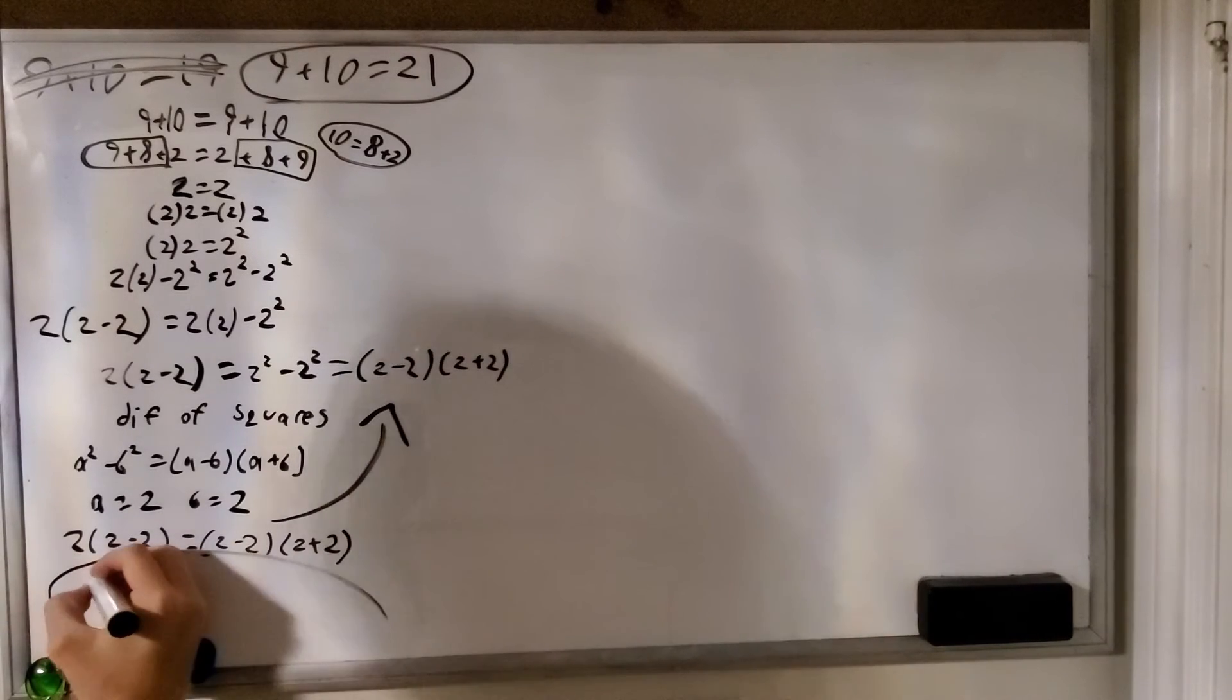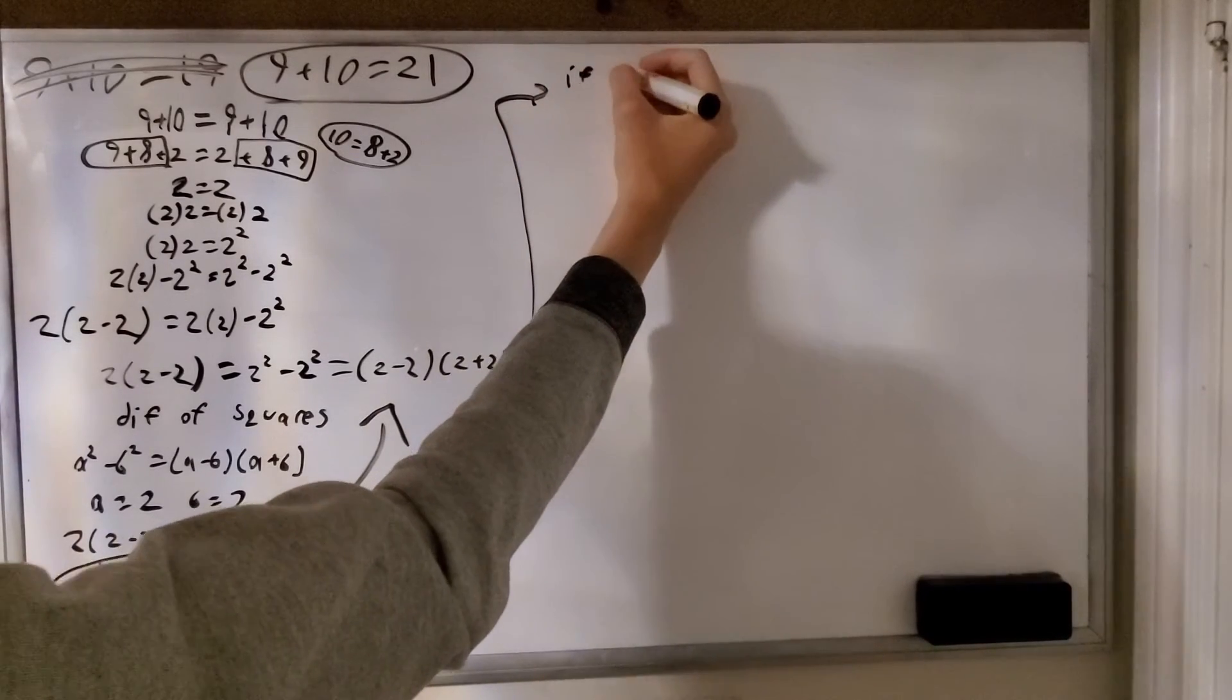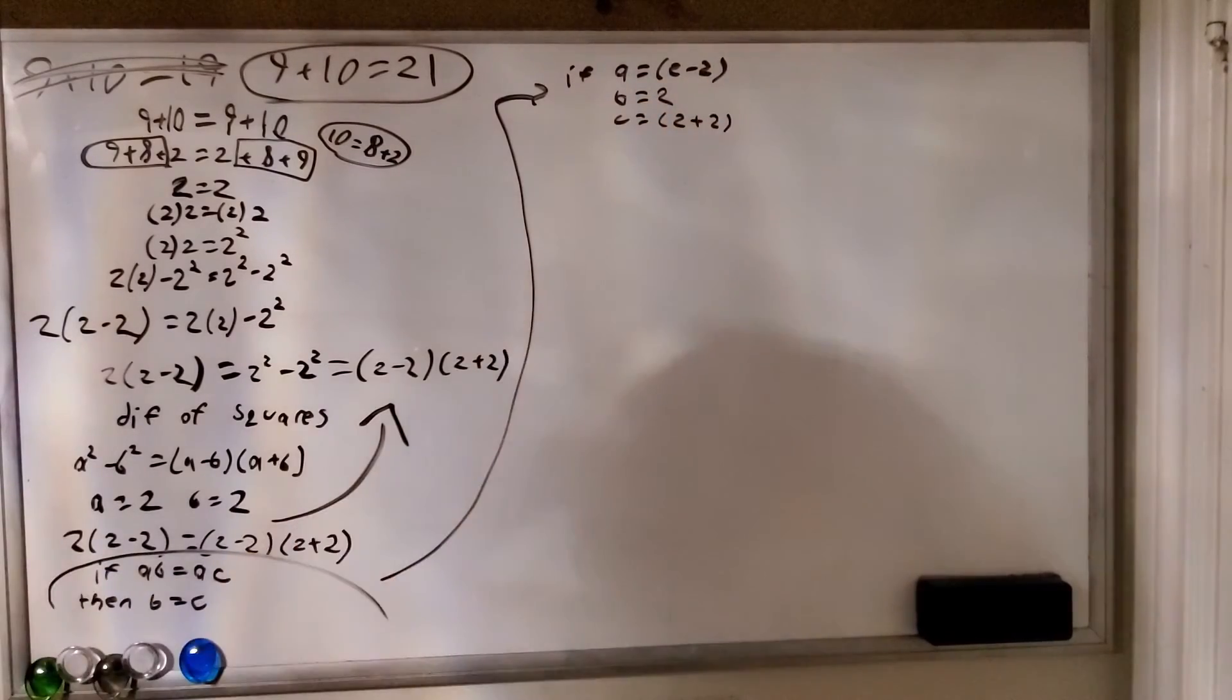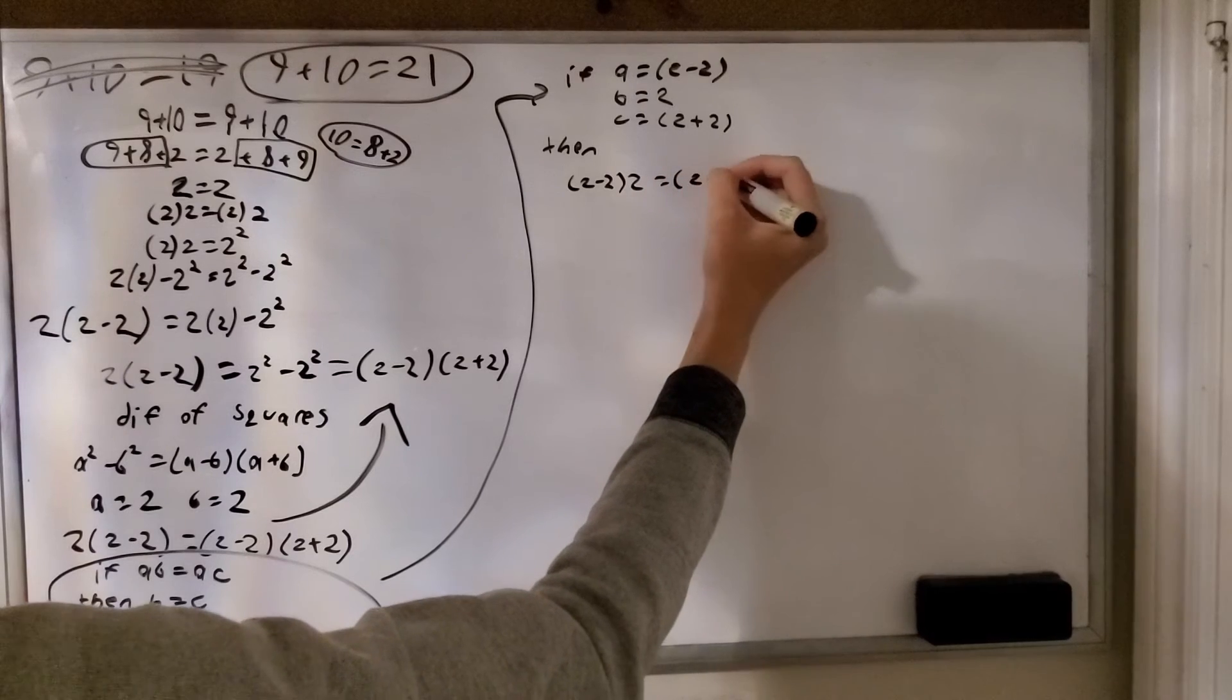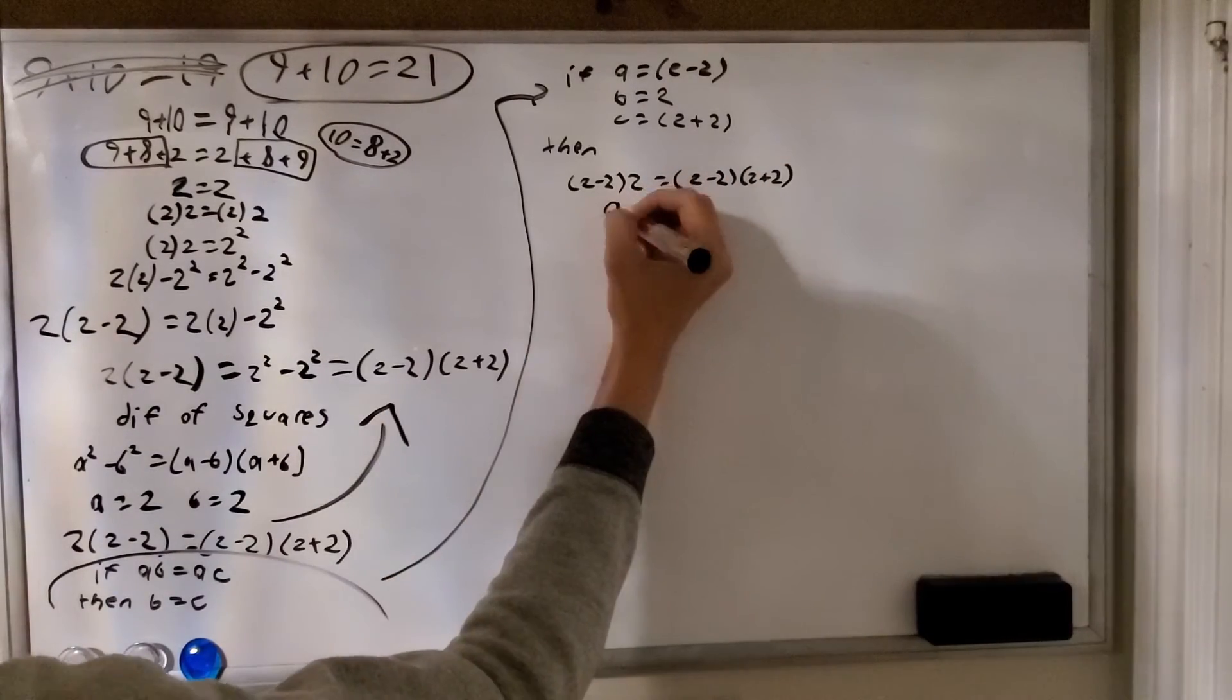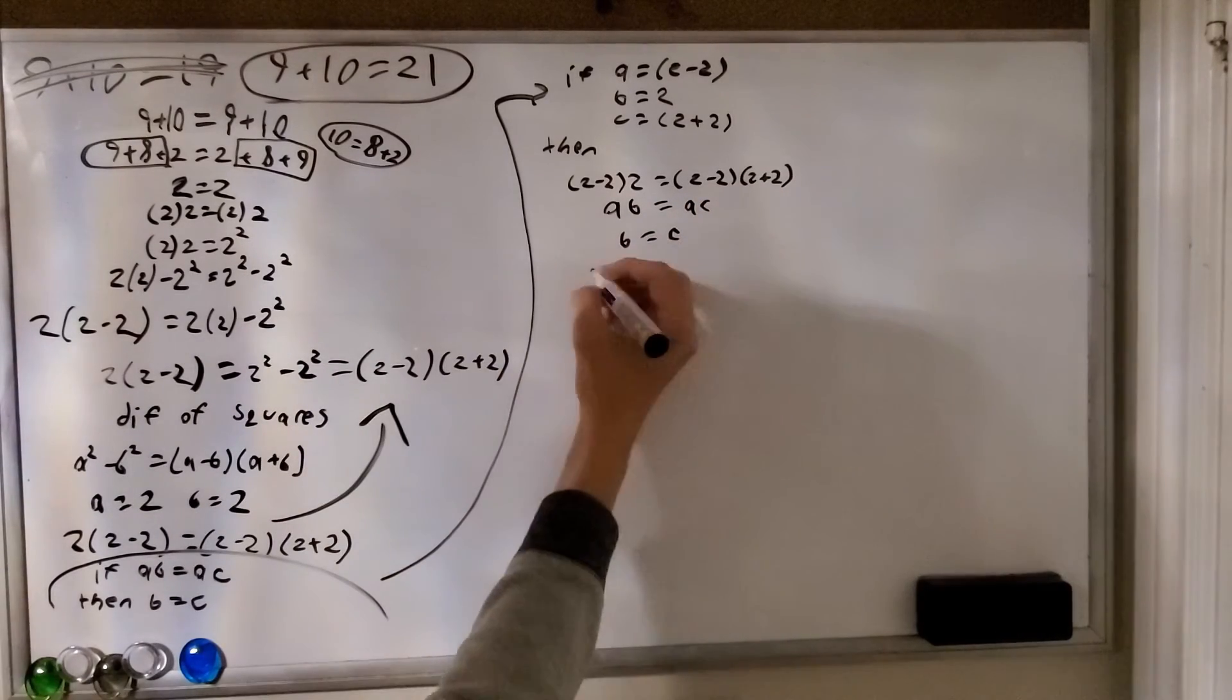Now we're going to divide both sides by 2 minus 2. And the equality will still be true because if there's any equation where both sides of the equation have the same factor, then you can divide those both by the same factor, which is in this case 2 minus 2. Or in the generalized equation I'm showing you, a. So we can divide both sides by a to get b equals c. Or in this case, 2 equals 2 plus 2.